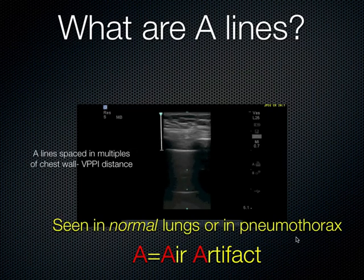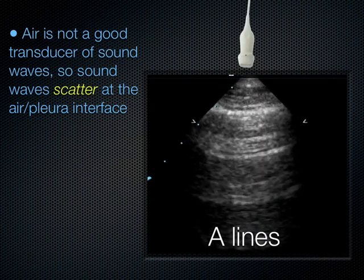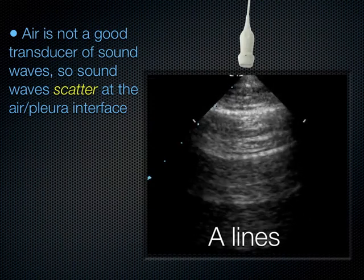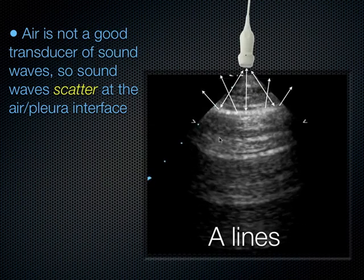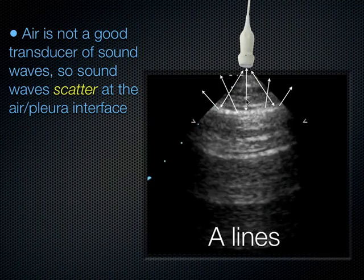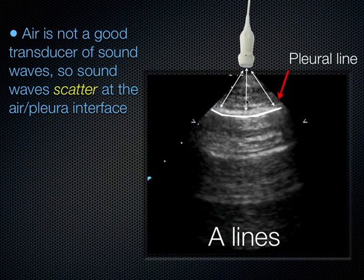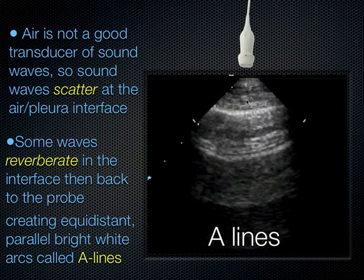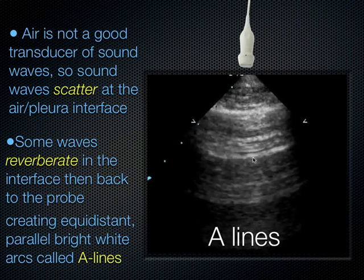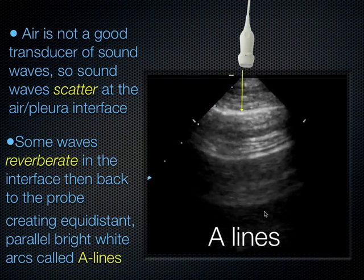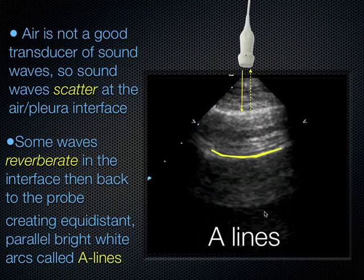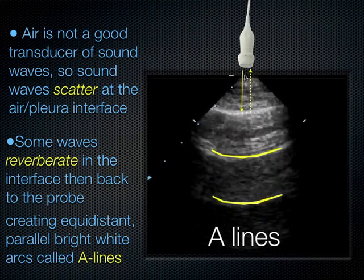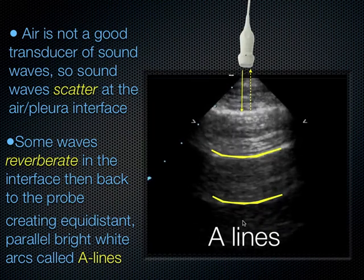We want to differentiate normal from abnormal. Those A-lines repeat in multiples as you go into the chest. Because air is not a good transducer of sound, sound waves get scattered at the air-pleural interface. The sound comes in, reflects off the pleura, comes back again, and there's this repeating artifact extending down at repeating intervals from the pleural line. We get equidistant parallel bright lines — A-lines. So there's the pleural line, then the first A-line, then the second A-line, repeating at equidistant intervals. That's normal — what we expect to see in normal lung, though it can also appear with pneumothorax.